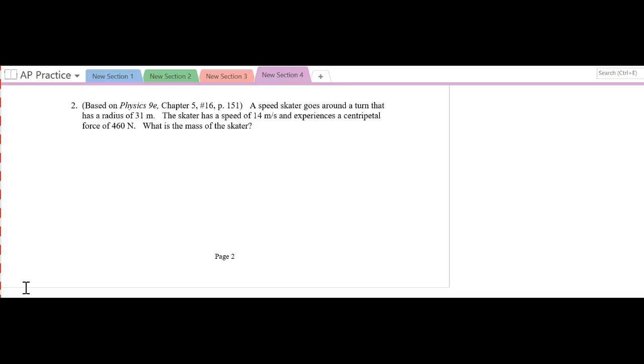The first one, I have a speed skater that goes around a turn that has a radius of 31 meters. The skater has a speed of 14 meters per second and experiences a centripetal force of 460. What is the mass?